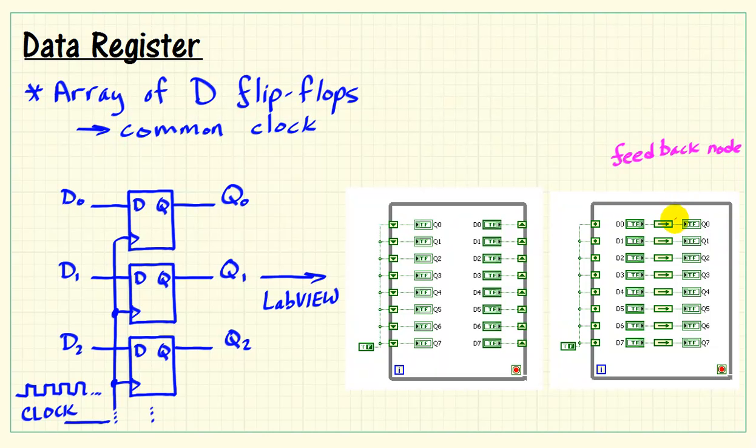The feedback node output corresponds to the Q output on our flip-flop back here. And again, that's the stored value or the state that's being preserved. And that corresponds to this output side of the shift register version.